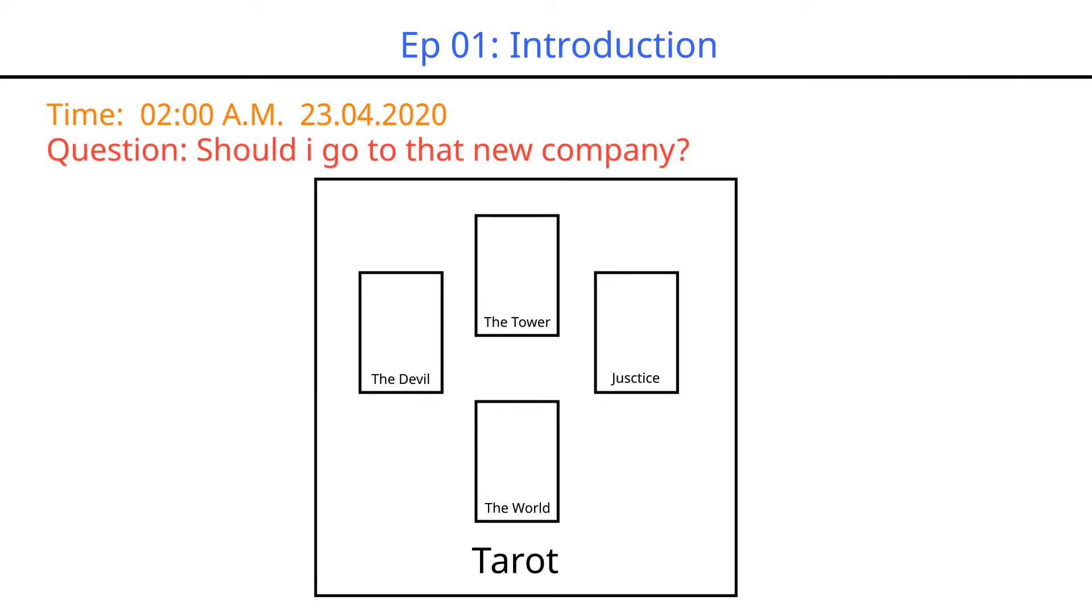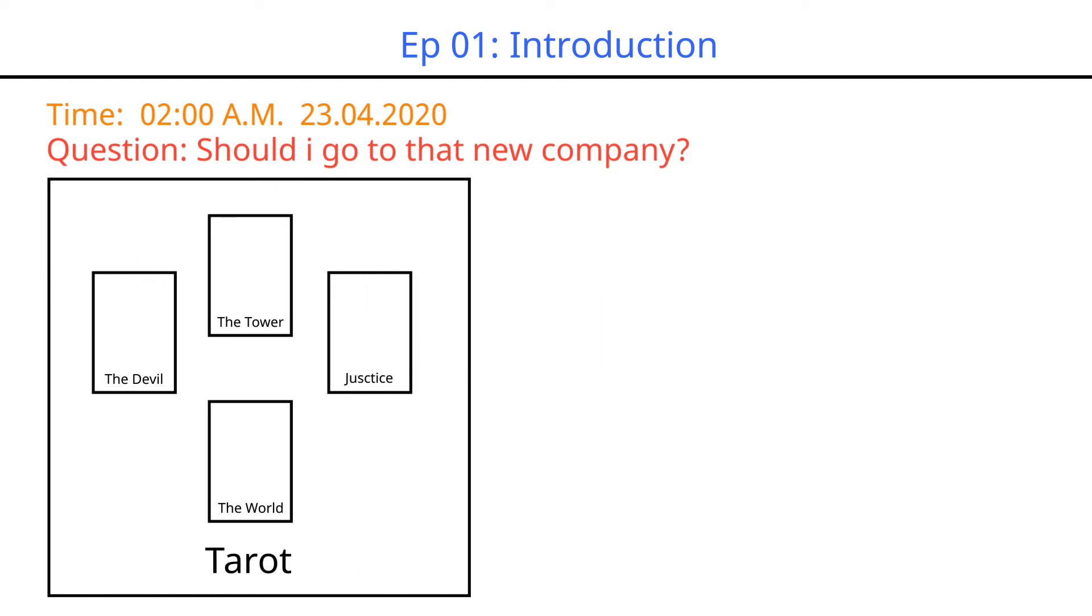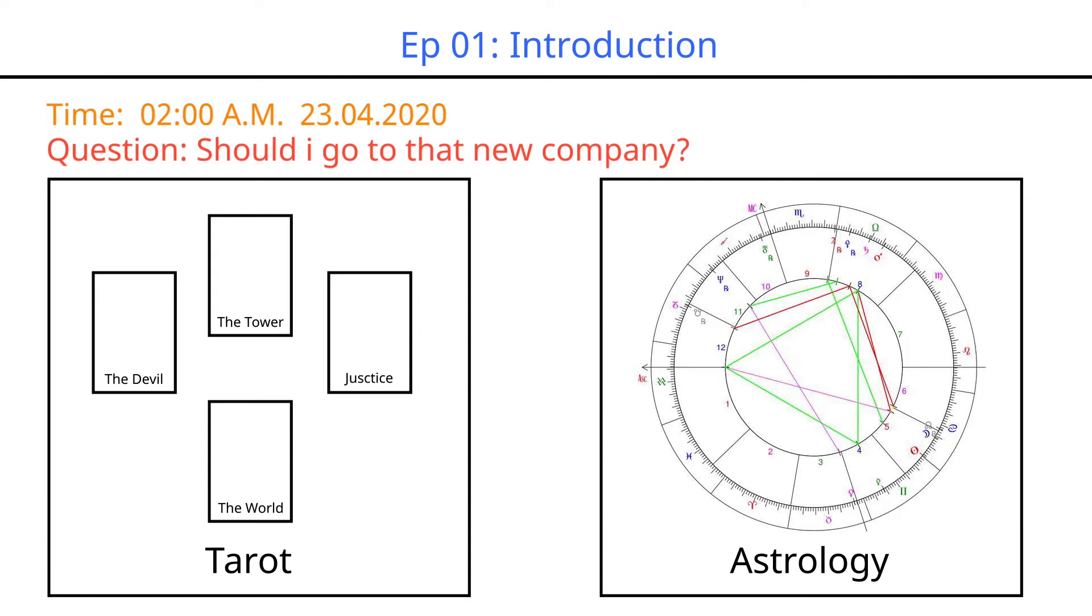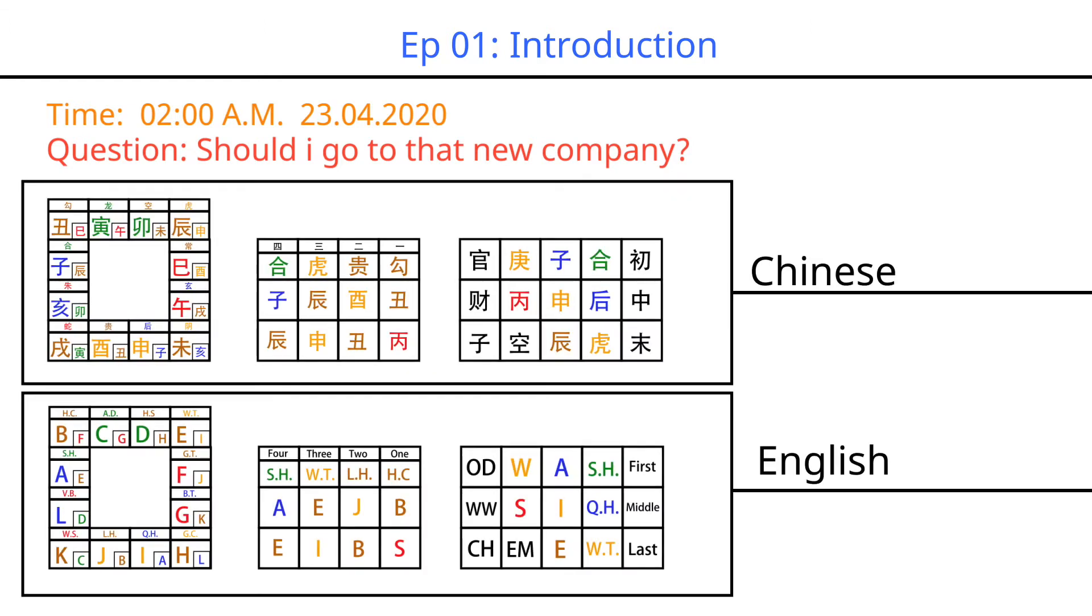Just like when we use tarot cards to predict things, we need to put the tarot cards in a certain formation to analyze the meaning of cards. When we use astrology to predict things, we need to analyze the astrolabe to get the prediction result.